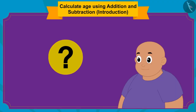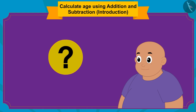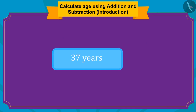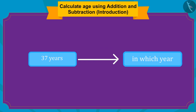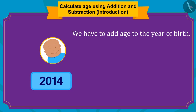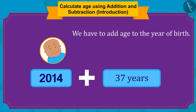Children, do you know how we can find the answer to this question? Whenever we are given the age of a person and want to find out in which future year he will be of that age, then we only have to add that age to the year of his birth.